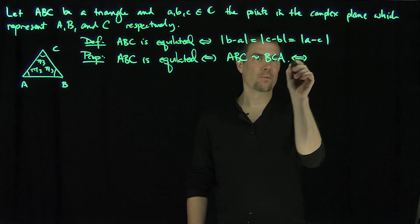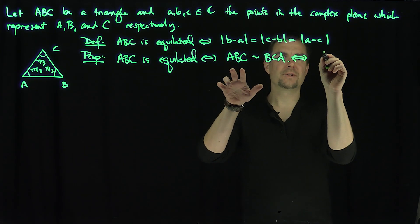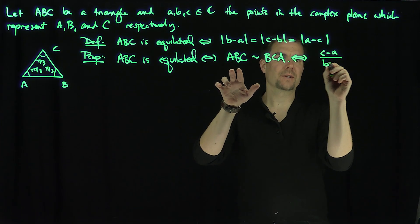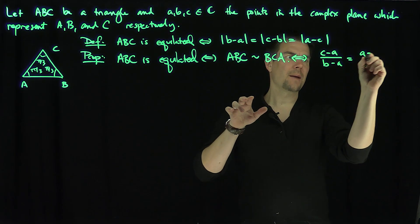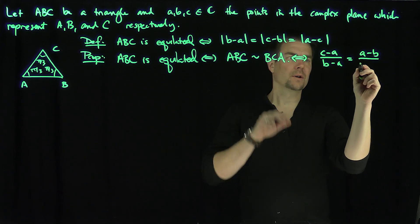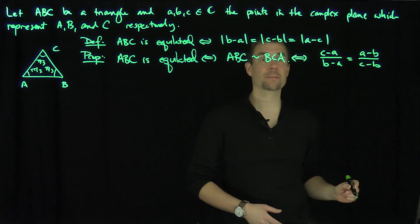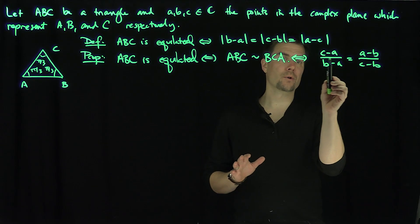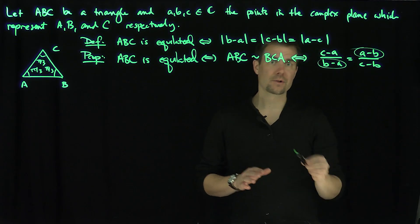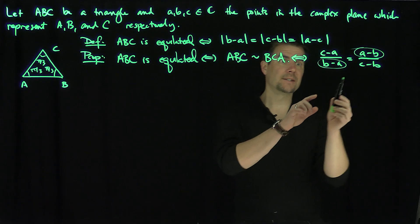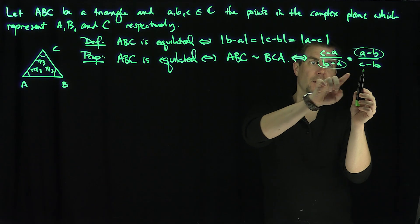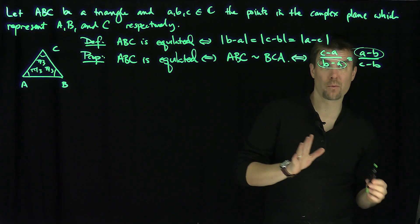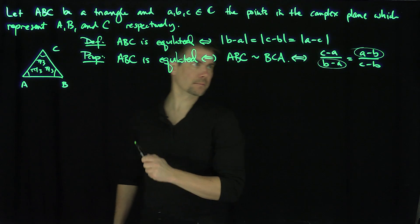This similarity condition is true if and only if (C − A)/(B − A) = (A − B)/(C − B). So we get a version of the cross ratio where those expressions are opposites of each other, giving the idea that (C − A)(C − B) = −1.